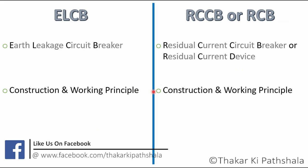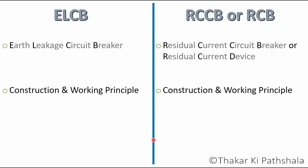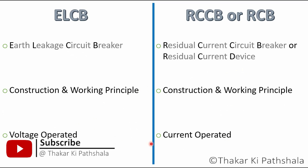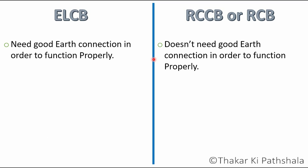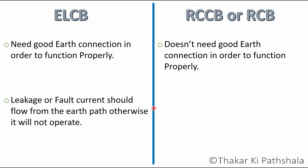From the above discussion, we can say that ELCBs are voltage operated devices and RCCBs are current operated devices. ELCBs require a good earthing wire connected to them, whereas for RCCB this is not necessary, as they operate on the difference between phase and neutral current — this is a key advantage of RCCB. Also, for ELCB to operate, it is necessary that the leakage current flows through the earth wire. If the leakage current takes any other path, it will not be sensed by the ELCB and it will not operate. This is not the case with RCCB, since they don't rely on the earth wire.